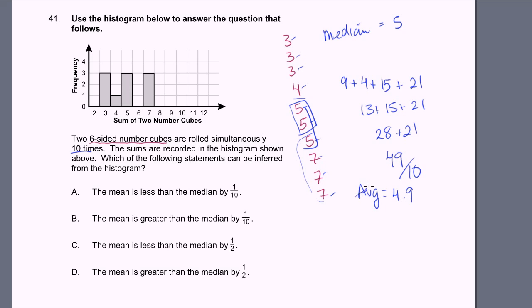So our average is 4.9. Our median is 5. So our average is 1 tenth less than our median. When I say average, I actually mean mean. But people tend to mean the mean when they say average. Our mean is 1 tenth less than the median. So the mean is less than the median by 1 tenth. That looks right. Choice A.